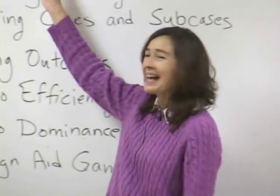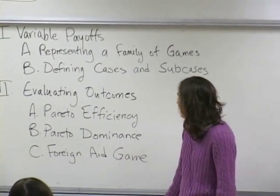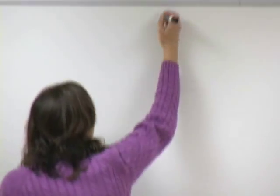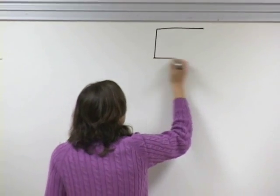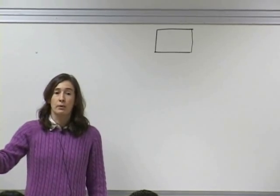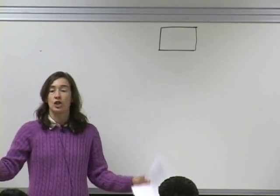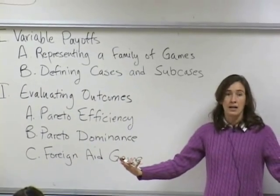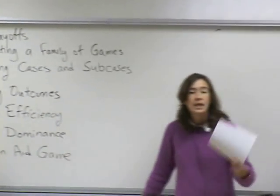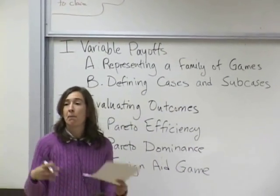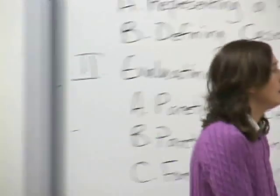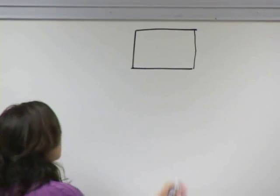We're still on the fundraising game—this is really the last topic I'll cover with it. By the time we get to the next topic, we'll be using a different example. Because variables introduce an extra level of abstraction, they're basically allowing us to talk about a whole bunch of games at the same time. We're expanding our analysis to cover not just one particular example, but a whole range of possible examples.